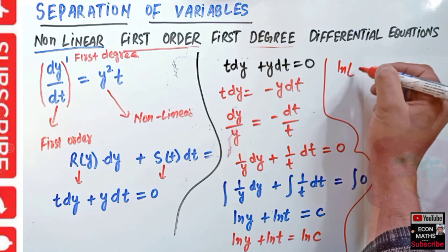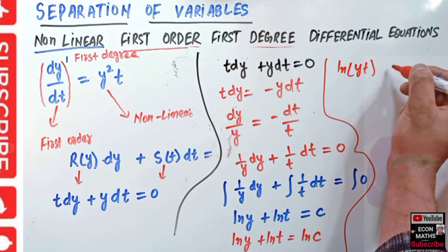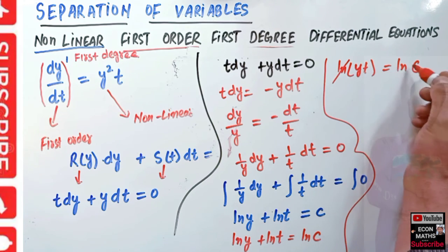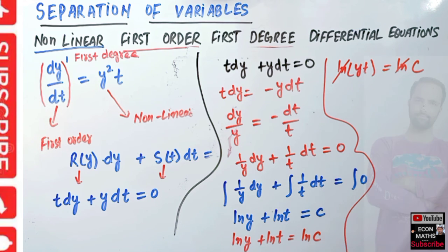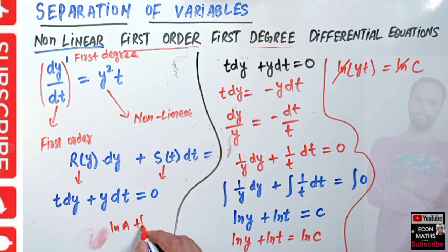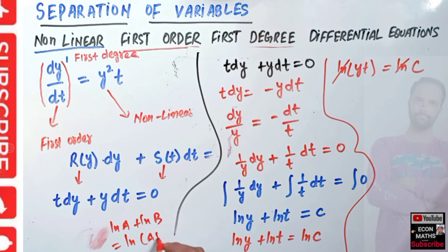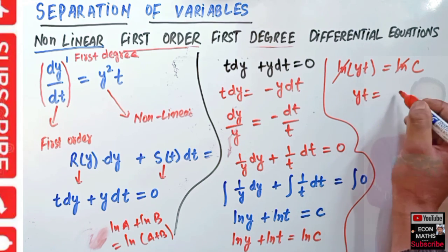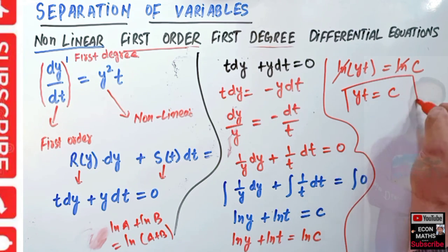Using the logarithm rule ln(a) + ln(b) = ln(ab), we can write ln(yt) = ln(C). The ln cancels from both sides, giving us yt = C. This is the general solution to the second example.